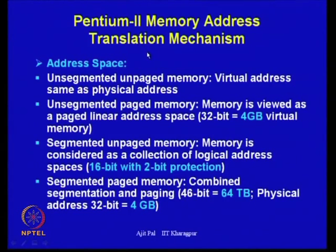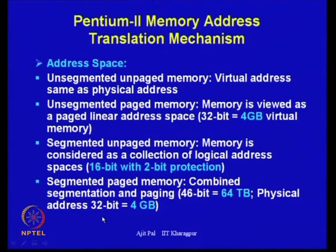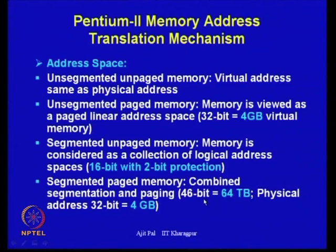As far as Pentium II is concerned, there are several alternatives available. It can use unsegmented unpaged memory, unsegmented paged memory, or segmented paged memory which combines segmentation and paging. It uses 46 bits providing 64 terabytes of virtual memory. There are two bits used for the purpose of protection, so it has a 48-bit virtual address generated by the processor, and the physical address is 32 bits.